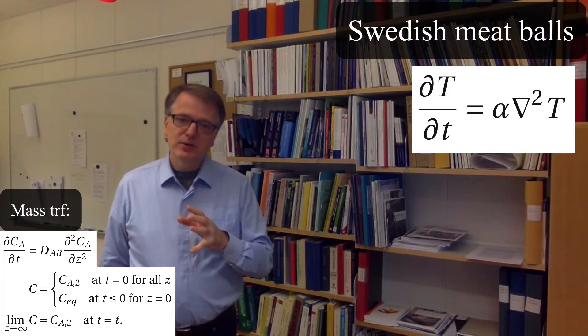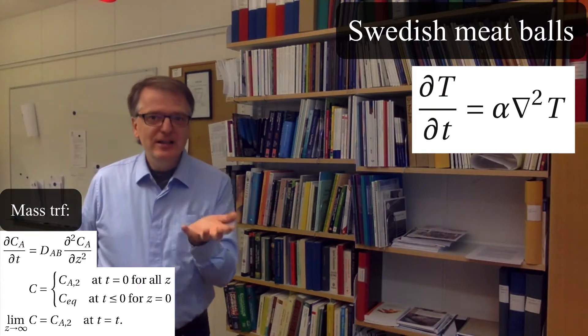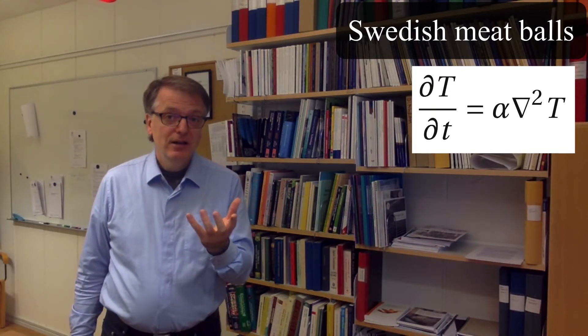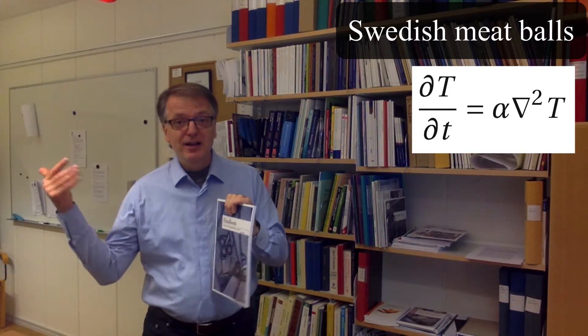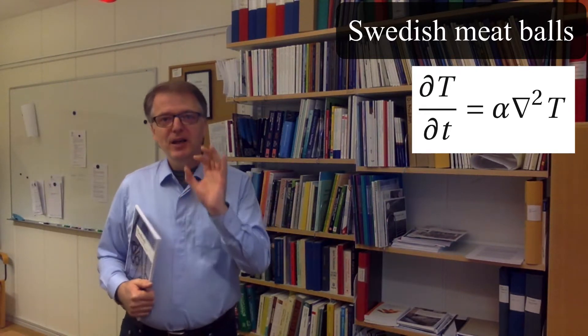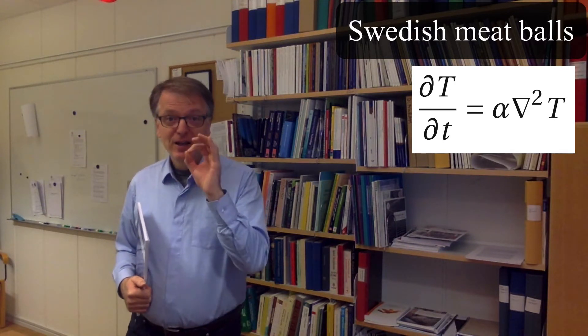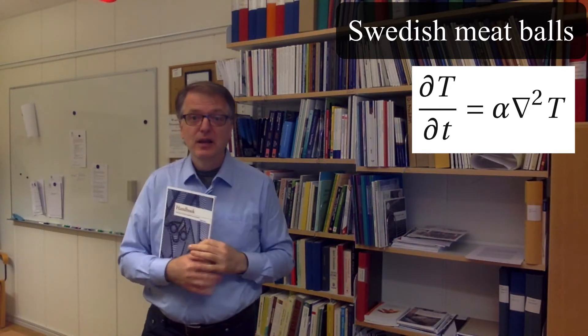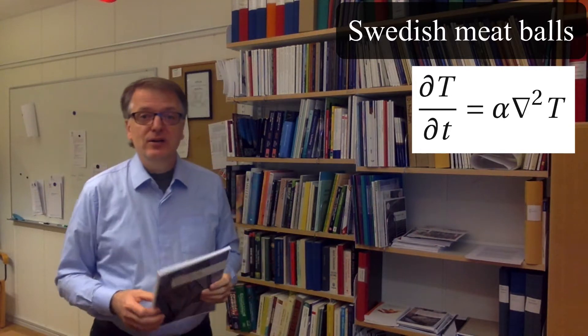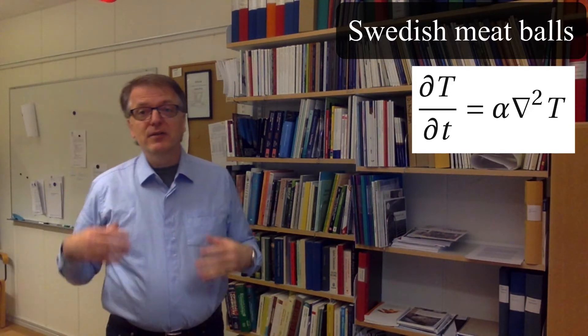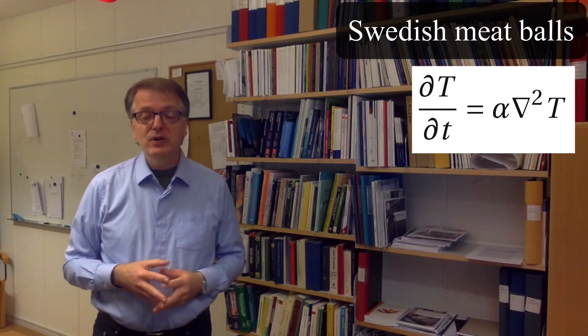So with meatballs, if you think of heating up a meatball, for example in a hot air oven, you have a heat transfer and you can describe then the rate of heat flux over the boundary. And then you get a different kind of problem, same kind of equation, but a different boundary condition.